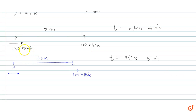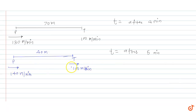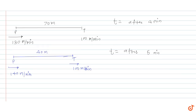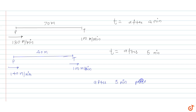Ab police की speed 140 meter per minute हो जाएगी। पाँचवे मिनट के last में thief 100 meter आगे जाएगा तो इनके बीच की distance 140 होगी, but उसी minute में police भी 140 meter आगे आजाएगा। तो after completion of 5 minutes, police catches the thief. यहाँ पे answer हो जाएगा — police catches the thief after 5 minutes.